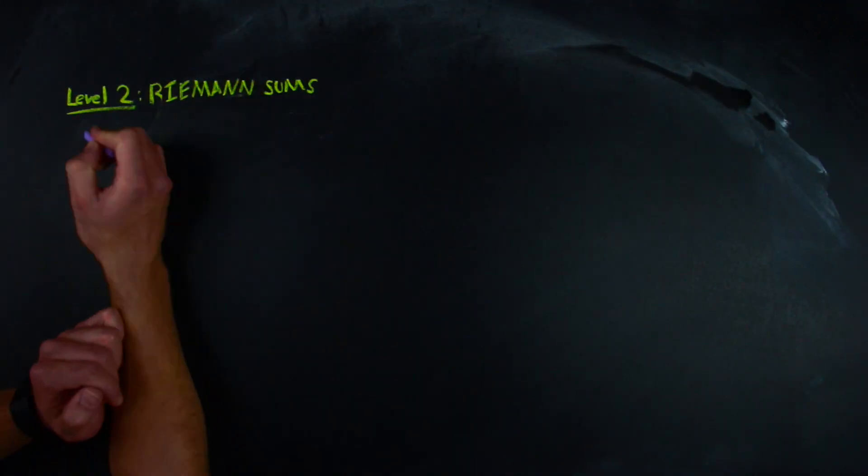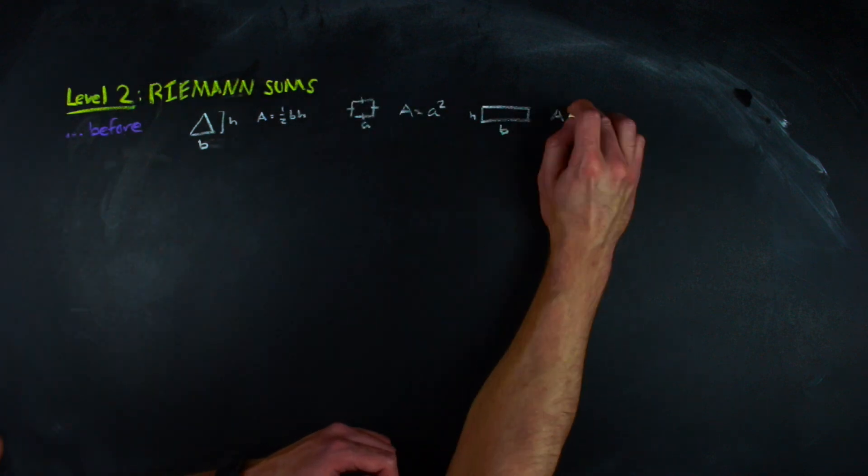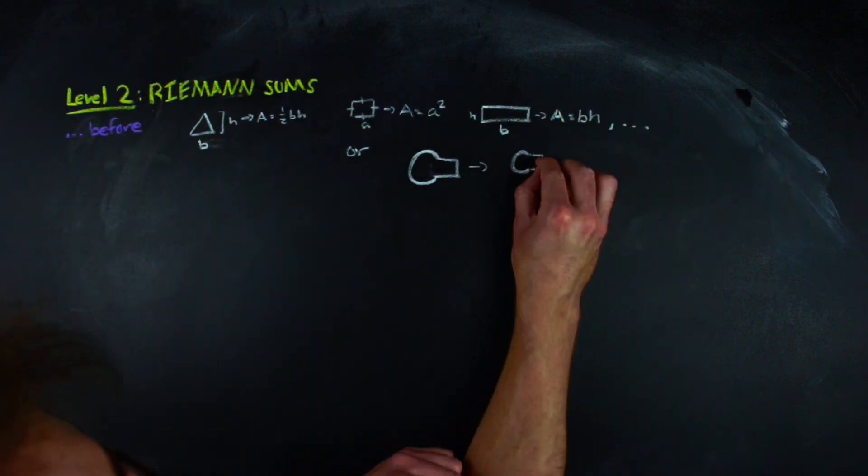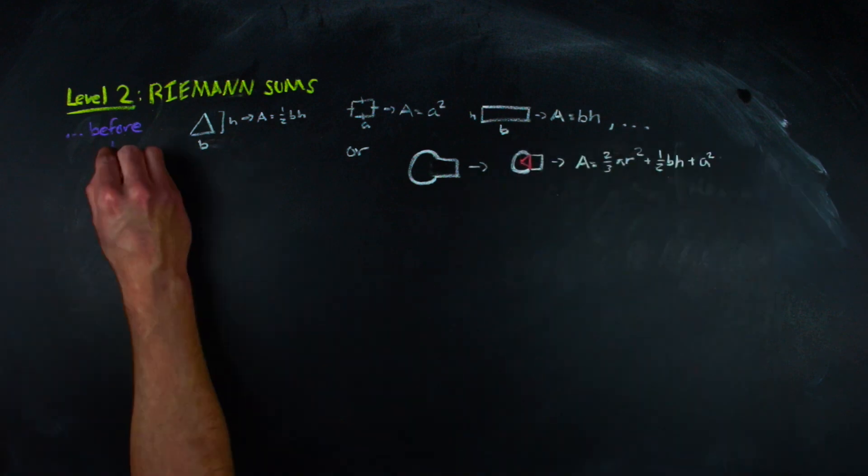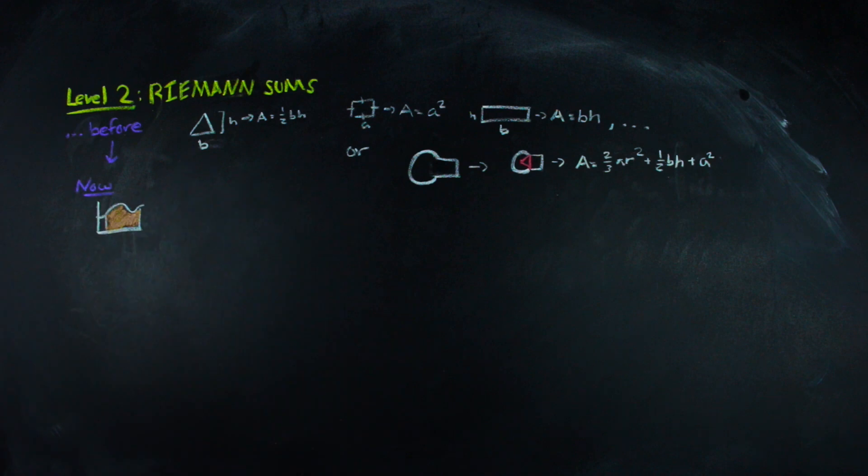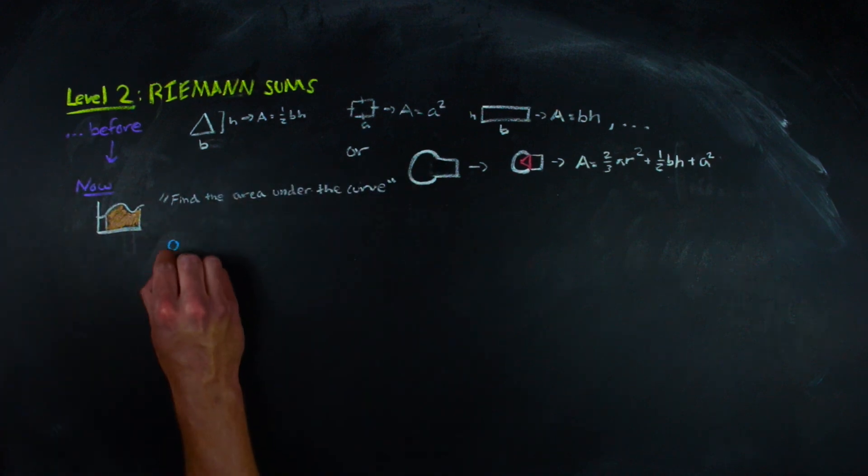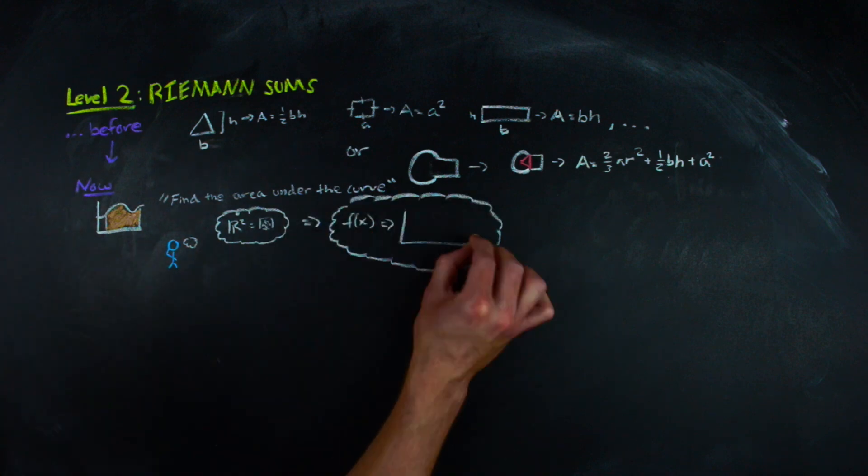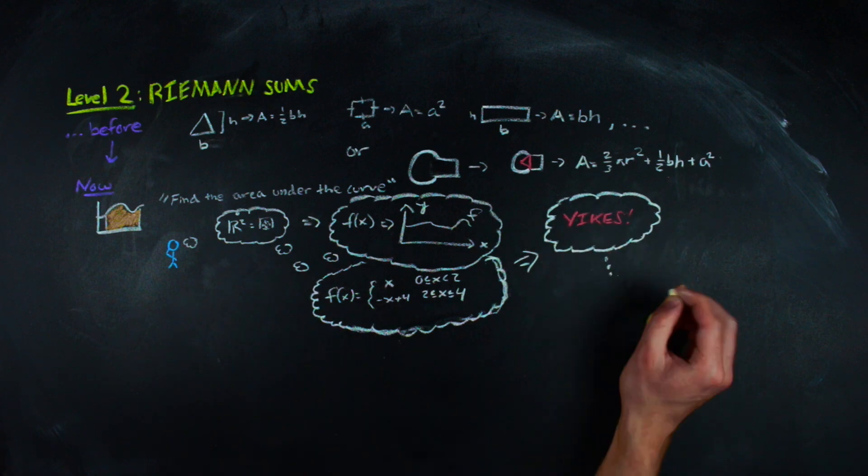Riemann sums. Here we are. All you've known as area thus far has been in the form of formulas attributed to different shapes and terribly intense geometric calculations for those that don't fit into your formula arsenal. And then the guy on the board squiggles and tells you, find the area under the curve. At this point in your mathematical career, you know what the plane is and how to graph a function, but this function is still scary.